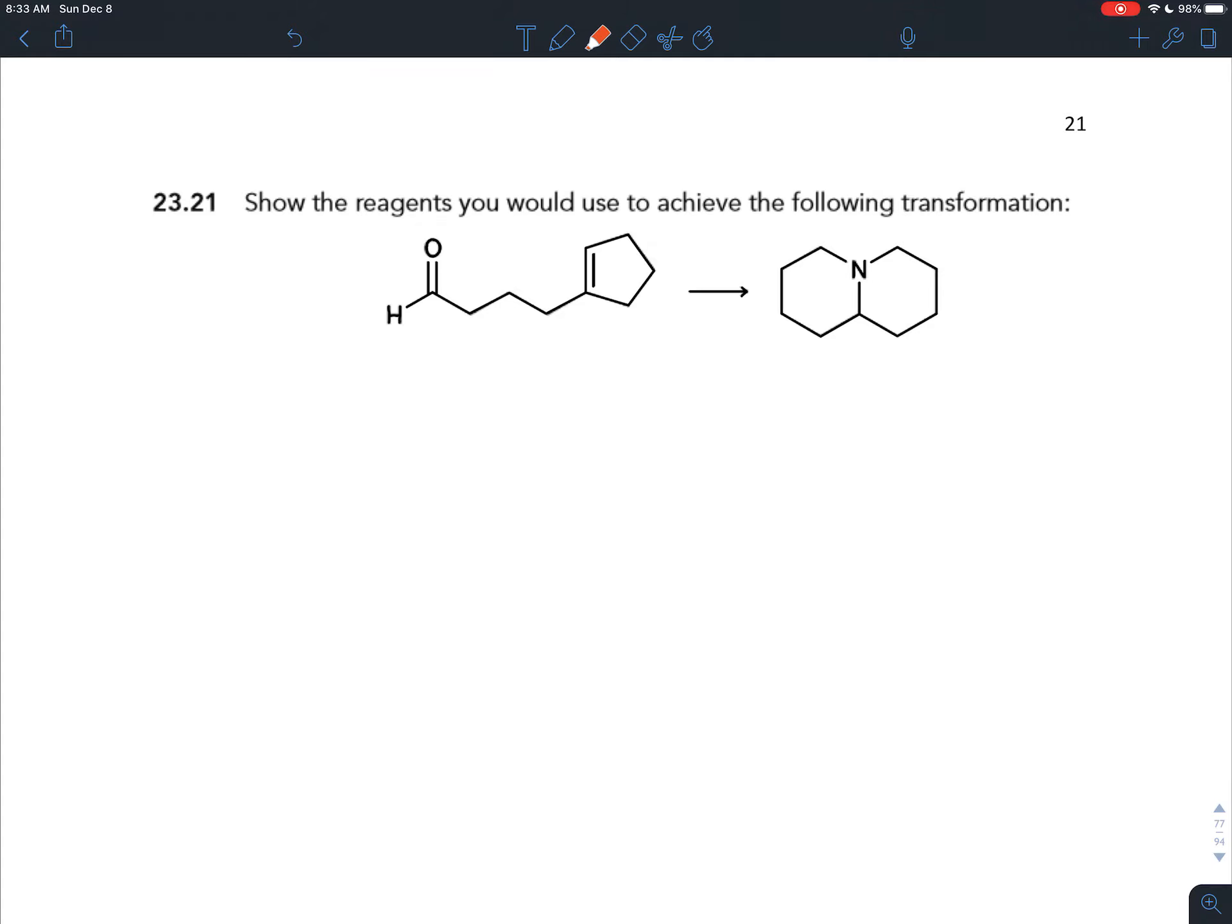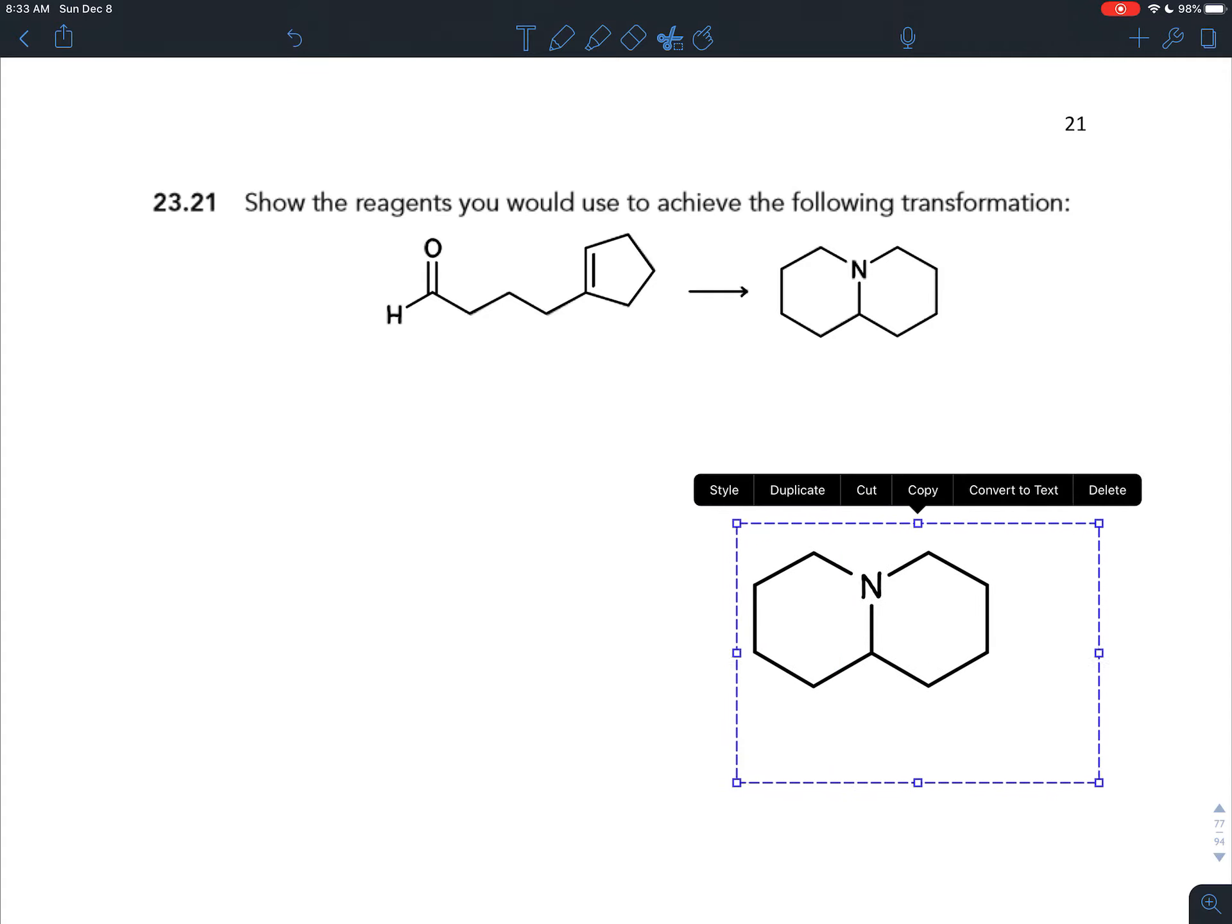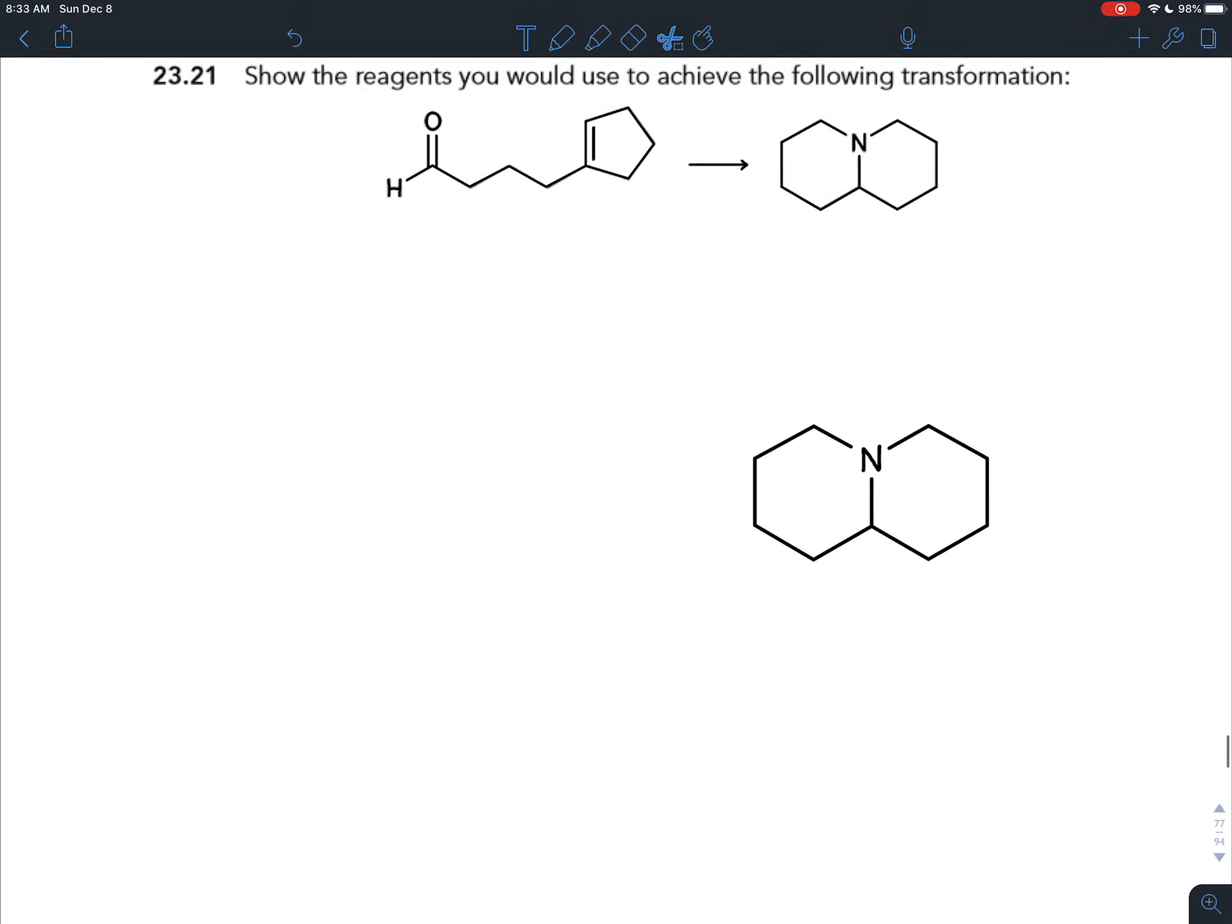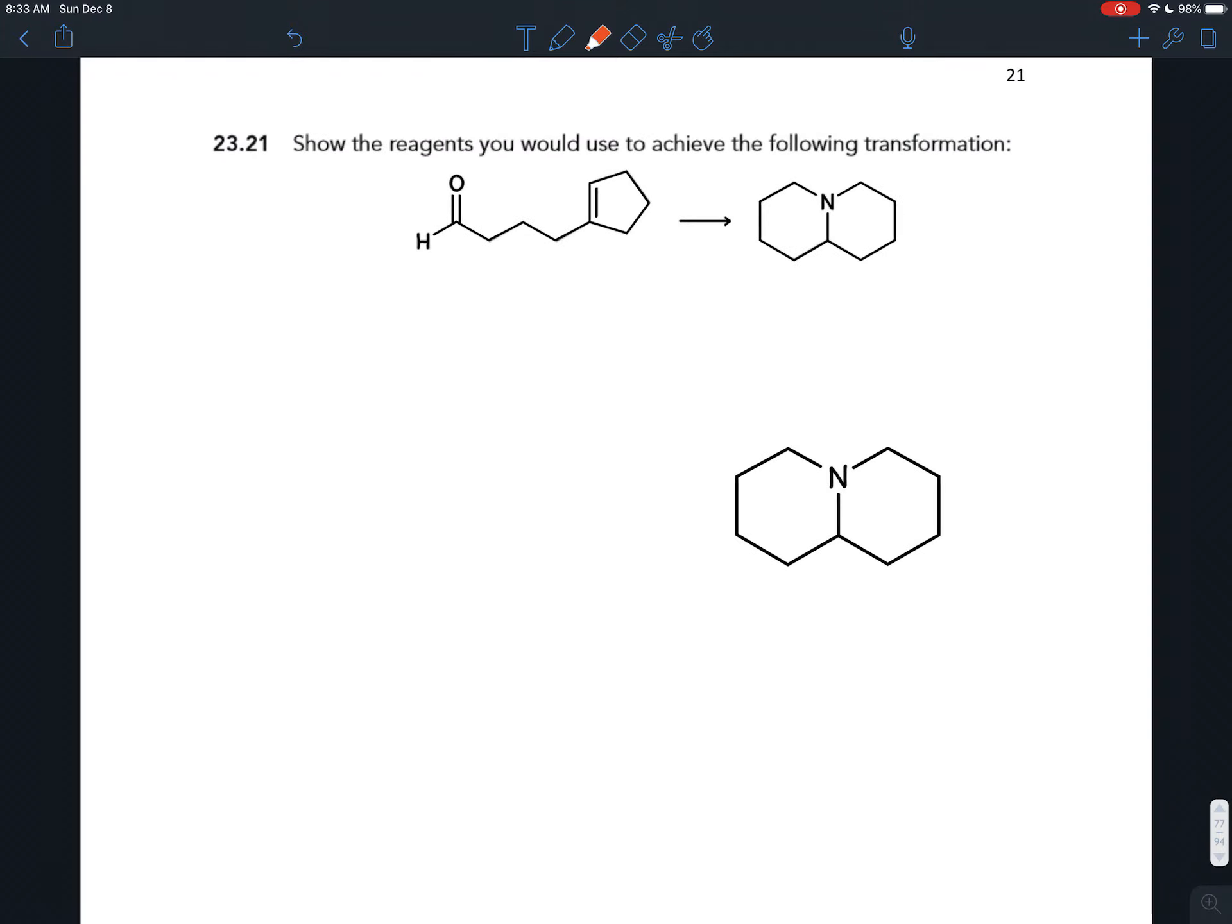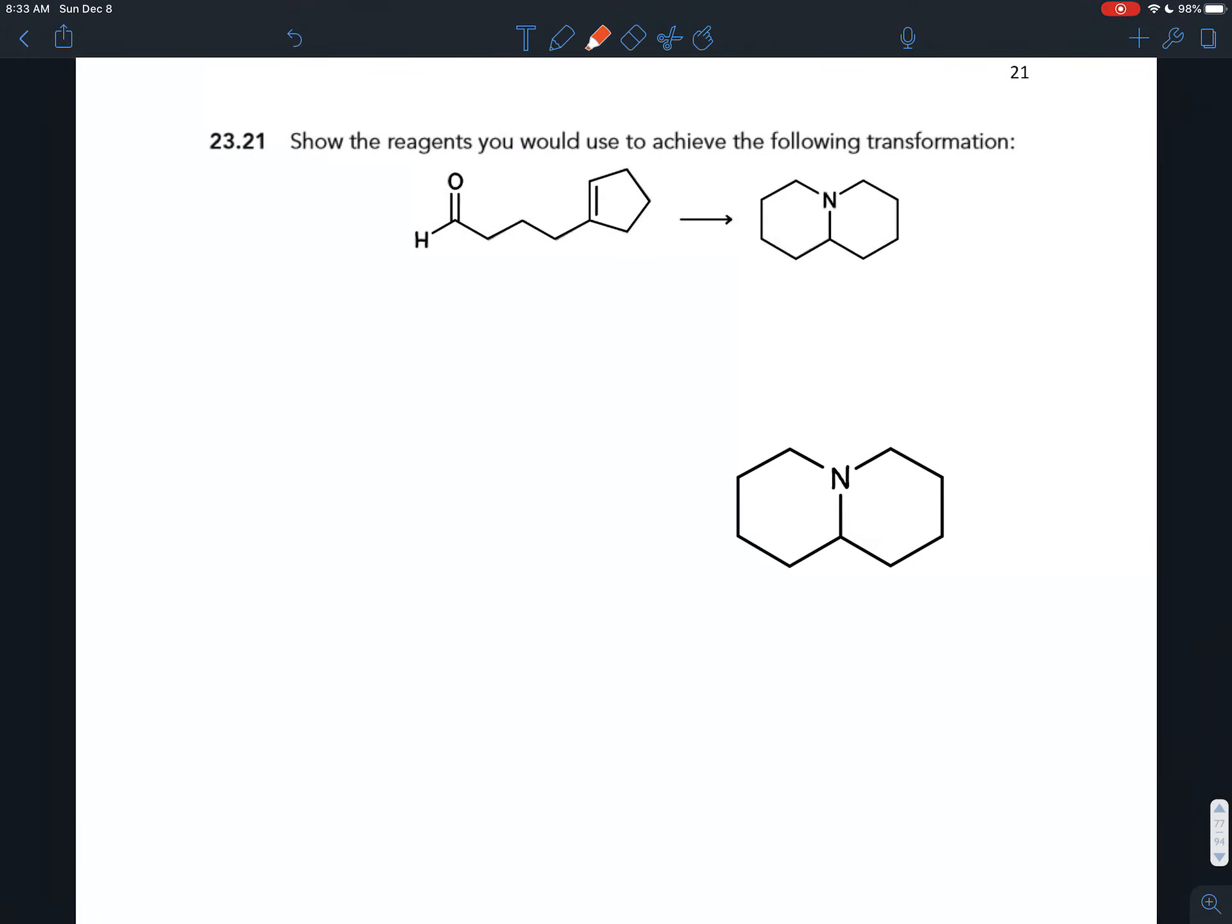And we've learned reductive amination. Now that can make any type of amine: primary, secondary, or tertiary. Well, we have a tertiary amine here, and so maybe the reductive amination would be a way to synthesize this. All we know is that we can make a tertiary amine by doing the reductive amination.